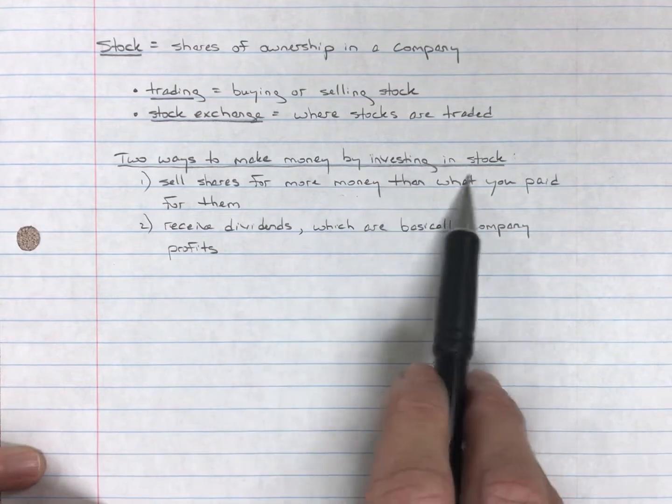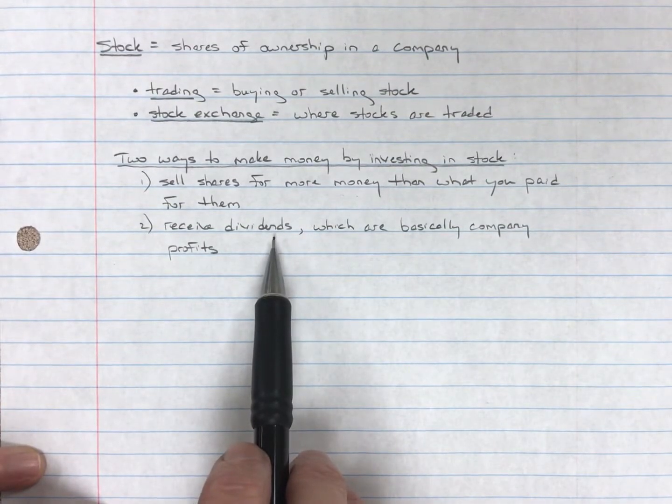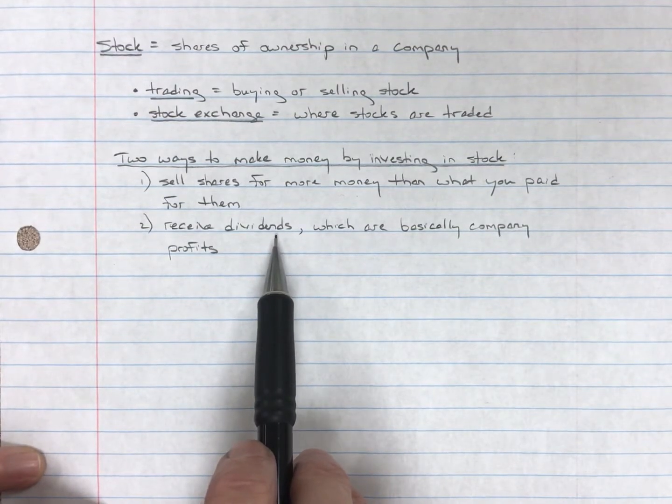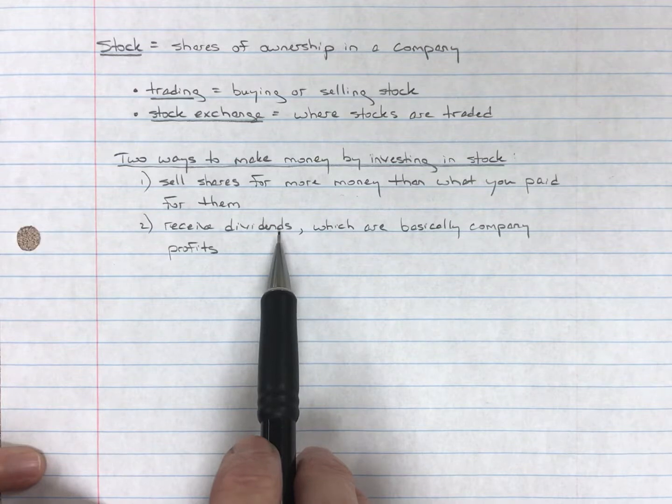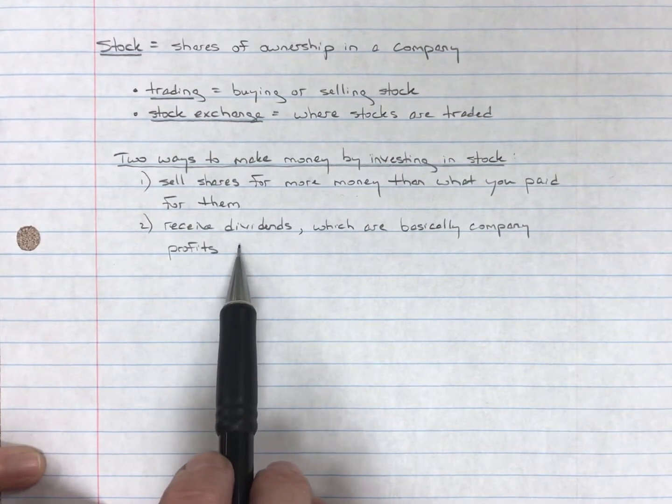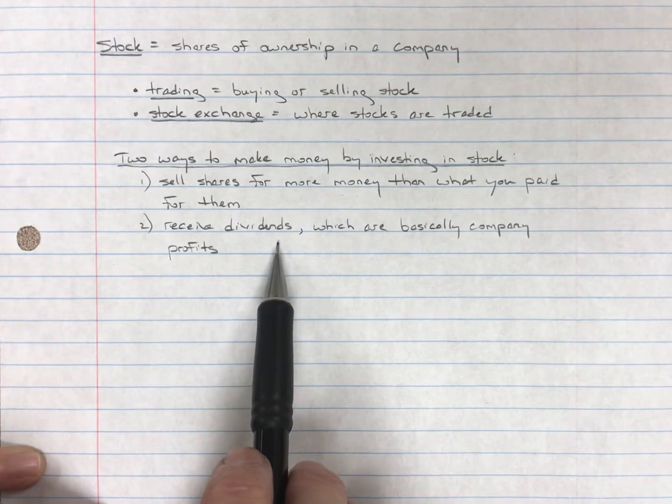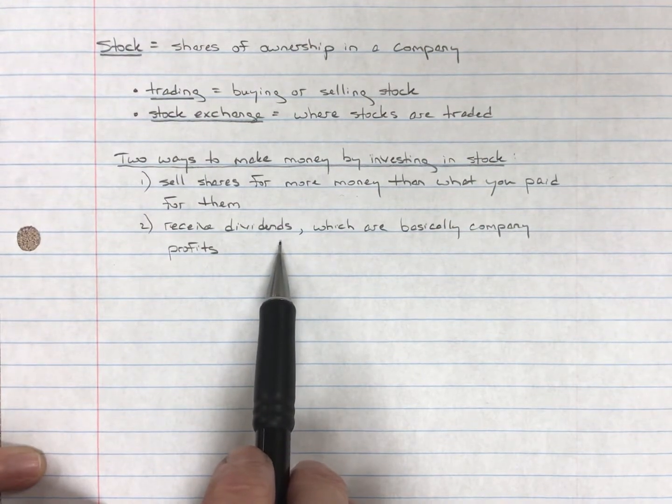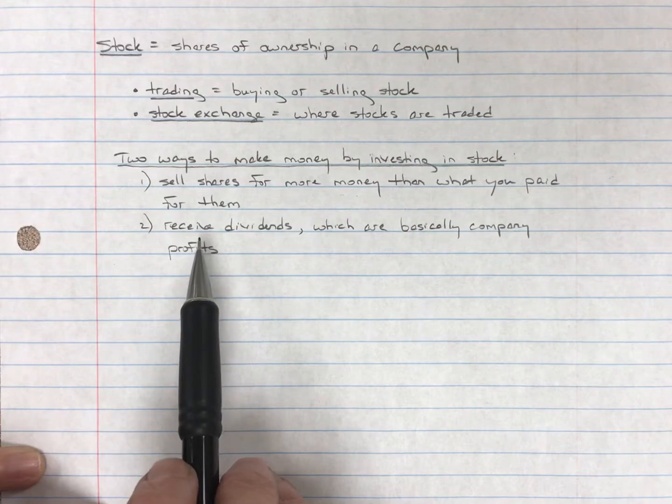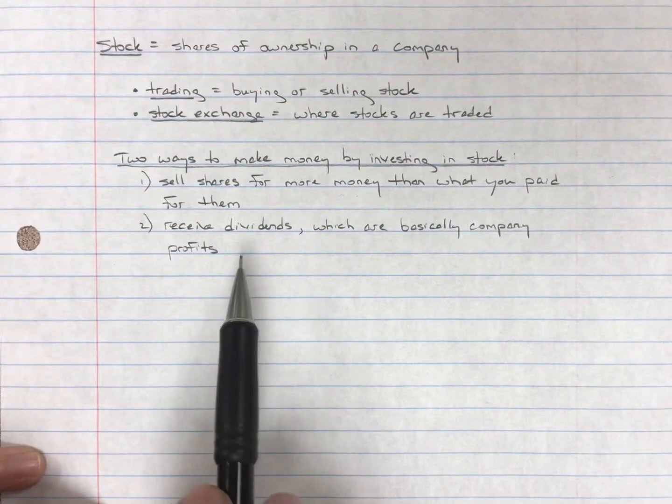The other way you can make money by investing in the stock market or investing in stock is you get dividends. You're an owner. And if the company decides to distribute its profits, and they do that by paying what's called a dividend. So again, let's go to Apple. If Apple has a great year and decides, we made a lot of money, we're going to pay some of that back to our shareholders, they will pay out a dividend per share.